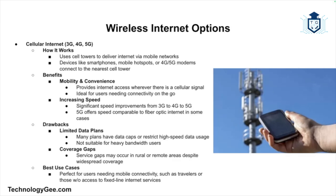Another benefit is increasing speed — with advancements from 3G to 4G and now 5G, cellular internet speeds have greatly improved. 5G in particular offers speeds comparable to fiber optic in some cases. Some drawbacks: many cellular plans have data caps or limited high-speed data, making it less suitable for heavy users who consume large amounts of bandwidth. There can also be coverage gaps, particularly in rural or remote areas.